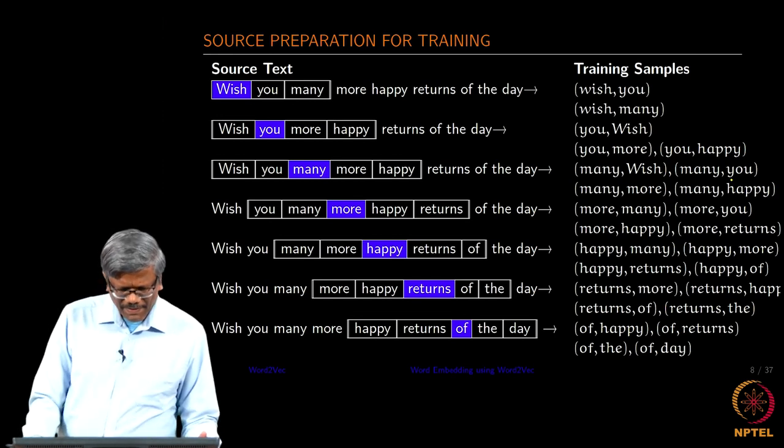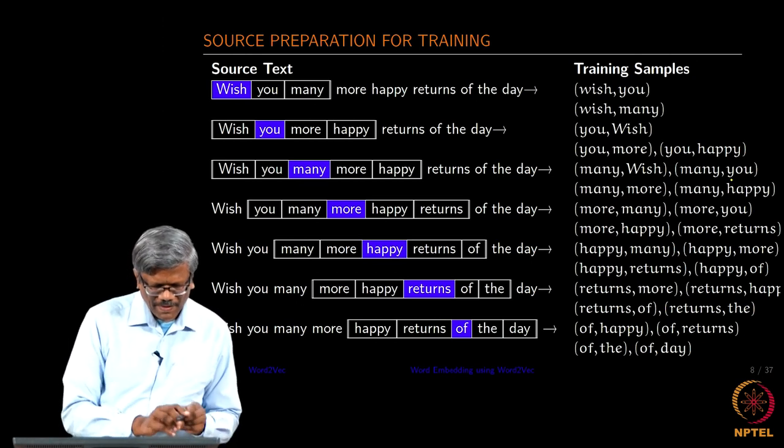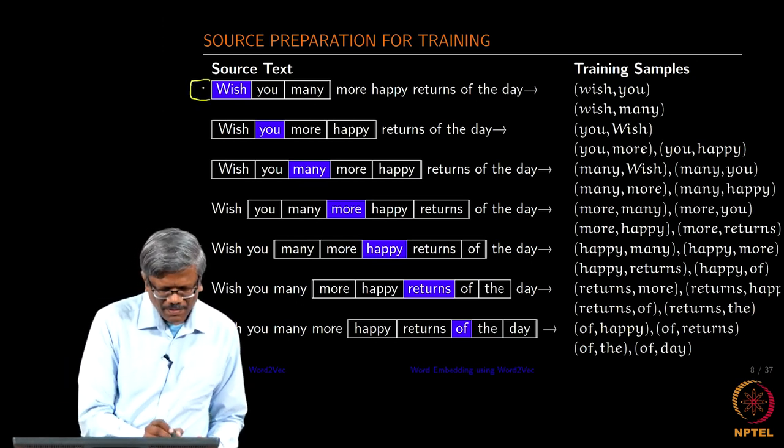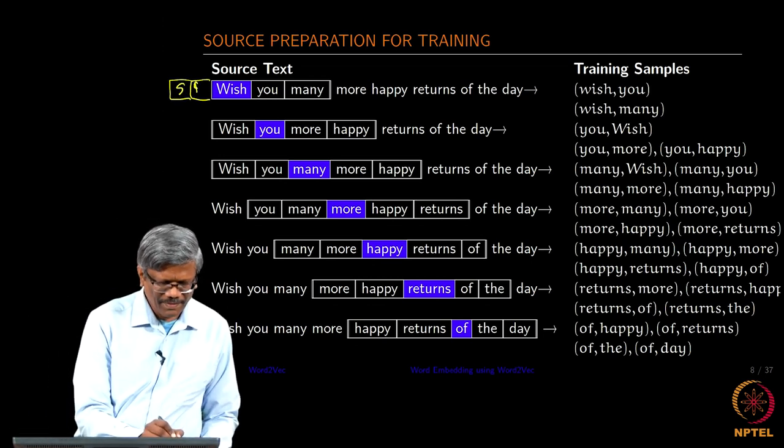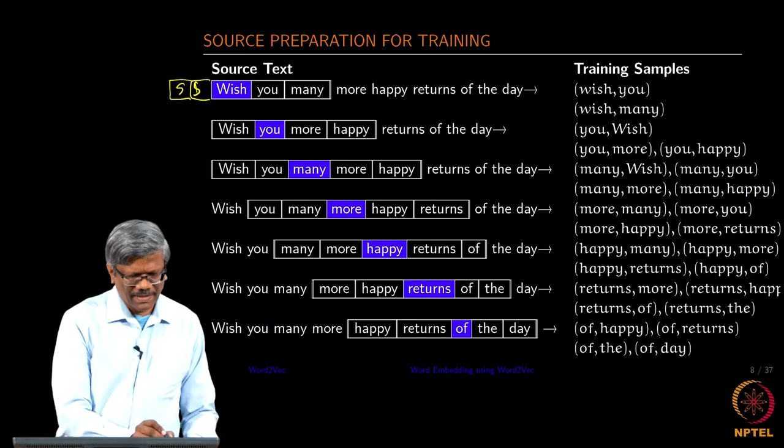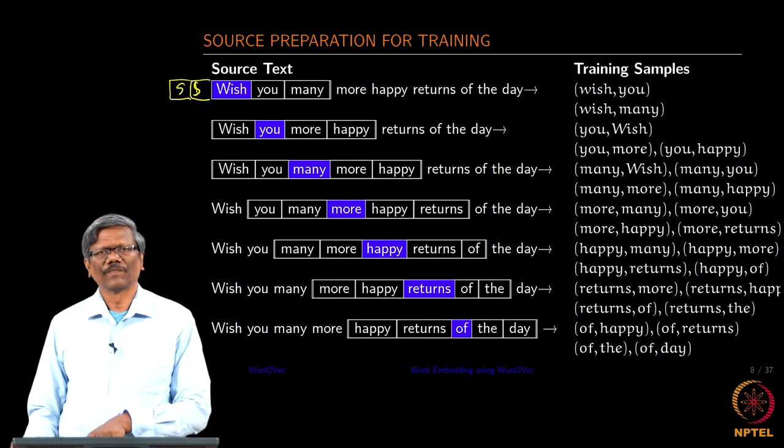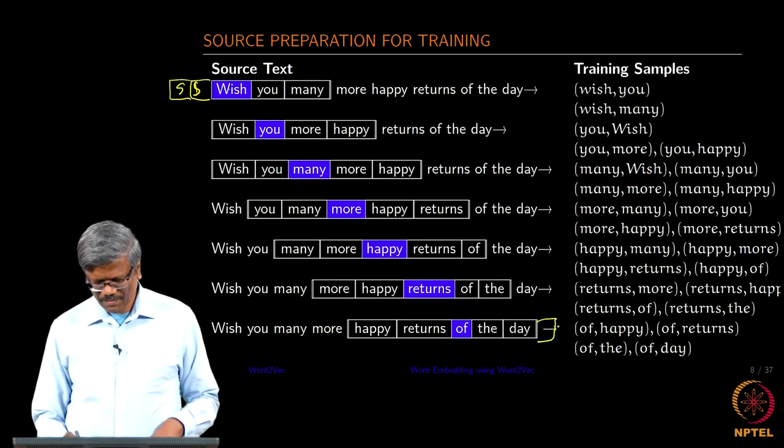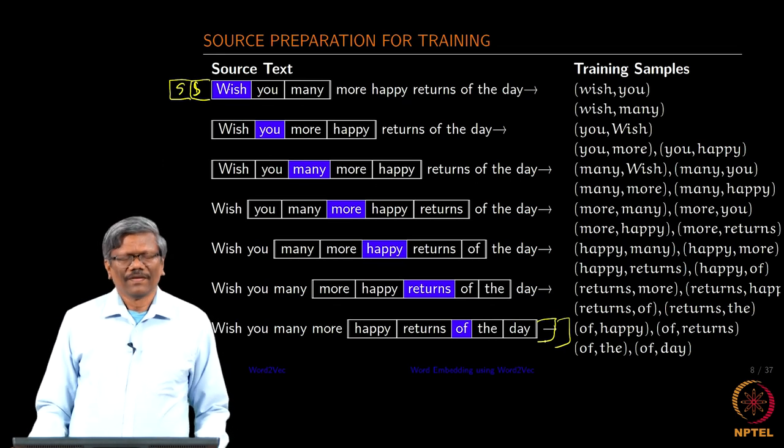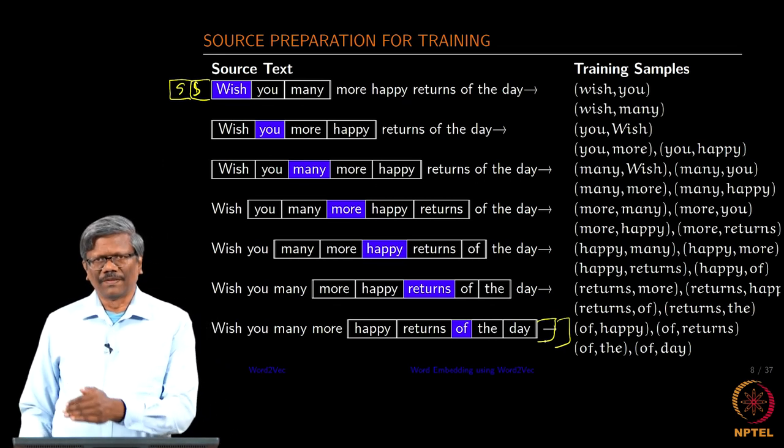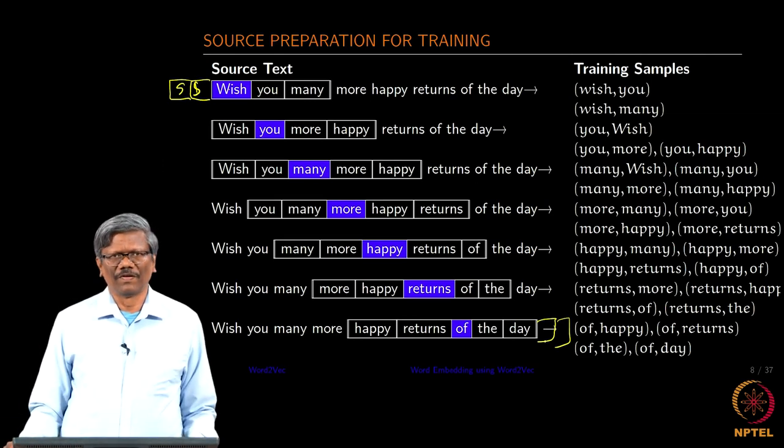When we start with that 5 grams, what happens is there is a start symbol in the beginning. That is when this becomes a central word. There will always be a start symbol and an end symbol like this. We start capturing the words that are surrounding the central word.